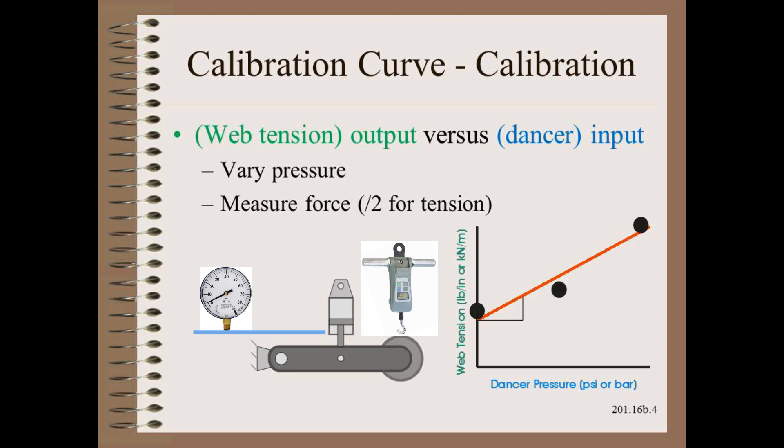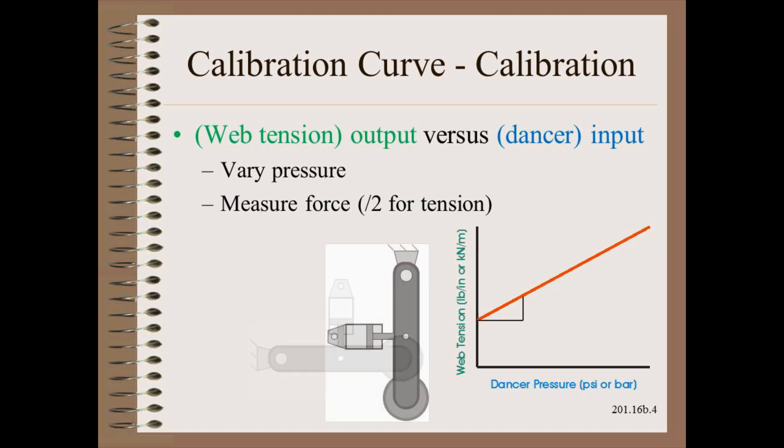Remember to divide by two for the typical case of 180 degrees of wrap. At least three widely spaced points should be obtained and they should fall close to the calculated curve. Your dancer and cylinder may vary from what is shown in the picture. However, it should be apparent how to adopt this procedure to your specific situation.